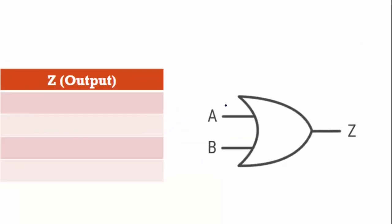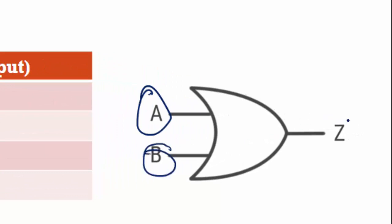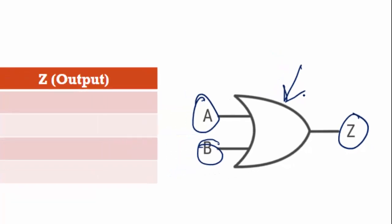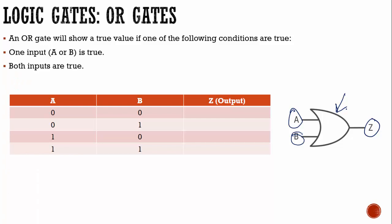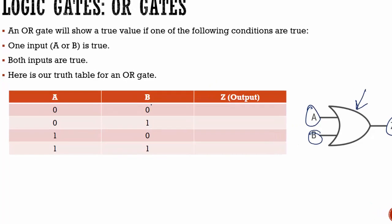Our next gate is the OR gate. We have two inputs and an output. The symbol is a little different — it doesn't look like a D; it looks more like a Star Trek symbol turned sideways. An OR gate will show a true value if one of the following conditions are true: if one input — A or B — is true, as long as one of them is true, or both inputs are true. You may be saying that's not what OR means — there's a different special type of gate where one or the other has to be true, which we'll go over next.